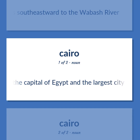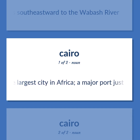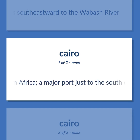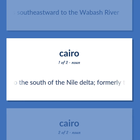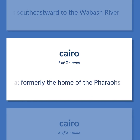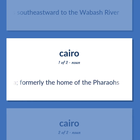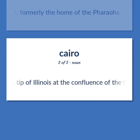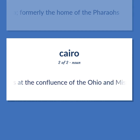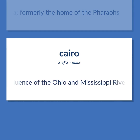Cairo: The capital of Egypt and the largest city in Africa, a major port just to the south of the Nile Delta, formerly the home of the pharaohs. Also a town at the southern tip of Illinois at the confluence of the Ohio and Mississippi Rivers.